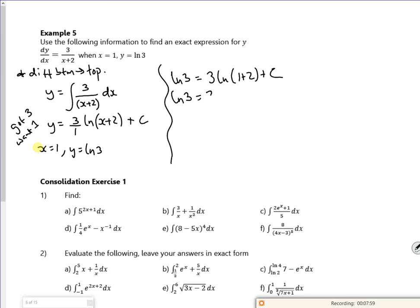So if I take it over there, I've got 1 lot of ln minus 3 lot of ln, I've got minus 2 log 3 equals c. So that's equal to c. So then my equation, y equals 3 log of x plus 2 minus 2 log 3. So I could have had the 2 log 3 as a log 9, couldn't I, if I wanted to.